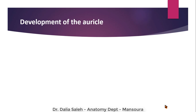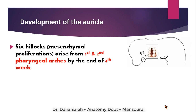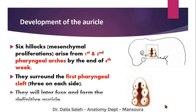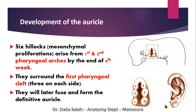For the development of the auricle or ear pinna, there are six hillocks — mesenchymal proliferations arising from both the first and second pharyngeal arches. They appear by the end of the fourth week of development and surround the first pharyngeal cleft on both sides. These six auricular hillocks bound the first pharyngeal cleft. Later, they grow and fuse together to form the definitive auricle: hillock one becomes the tragus, six becomes the antitragus, two and three form the helix, and four and five form the antihelix.